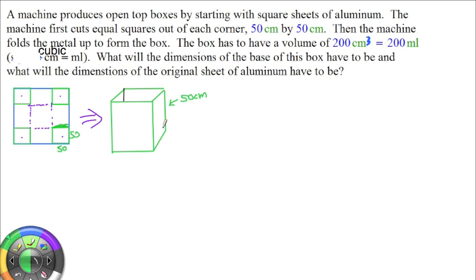That leaves the square base. Draw an imaginary base that's in there - it must have dimensions that we don't know, so we can just call them x. The dimension of our square bottom open top box is going to be x by x by 50 centimeters high.